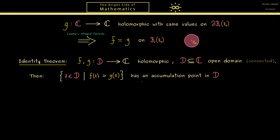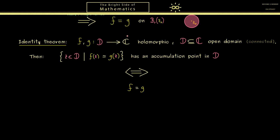Now the surprising fact is that this is actually equivalent to f being equal to g. So in other words one accumulation point is enough for this set to already equal d. In other words this small set already determines the whole holomorphic function. This is a generalization of the fact from above.